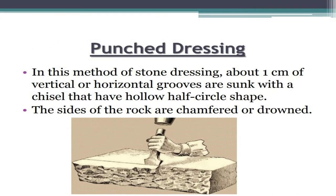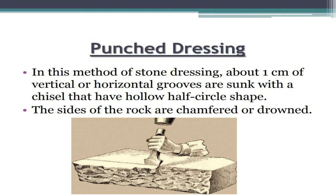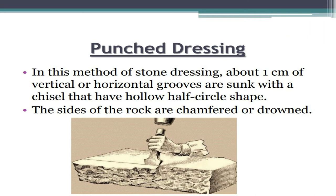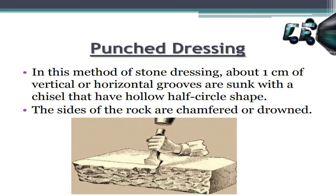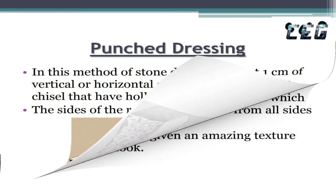Punch dressing: In this method of stone dressing, about 1 cm of vertical or horizontal grooves are sunk with a chisel that has a hollow half circle shape. The sides of the rock are chamfered or drowned.